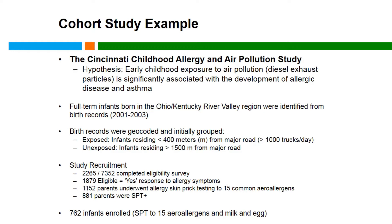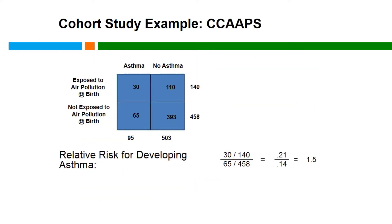To give you an idea of the time and expense of a prospective cohort study: recruitment took almost three years. We contacted more than 7,000 individuals and families. 2,265 responded to our eligibility survey, of whom 1,879 were eligible. 1,152 parents completed a skin prick test, and 881 parents were positive and therefore eligible for enrollment. In the end, 762 infants were enrolled, meaning they completed at least one study visit prior to age three. We've been following this cohort now for more than 12 years.